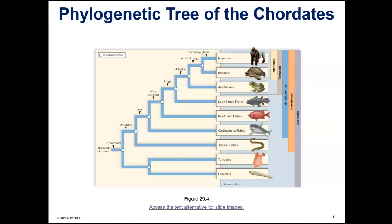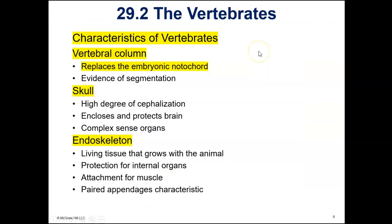This phylogenetic tree shows all of the chordates that we're going to learn. We've already covered the lancelets and the tunicates. Then we're going to start with all of the vertebrates, which will begin with the jawless fishes, the cartilaginous fishes, the ray-finned fishes, the lobe-finned fishes, amphibians, reptiles, and mammals.